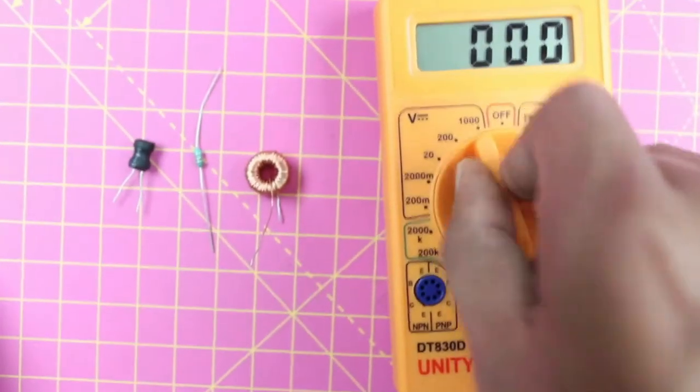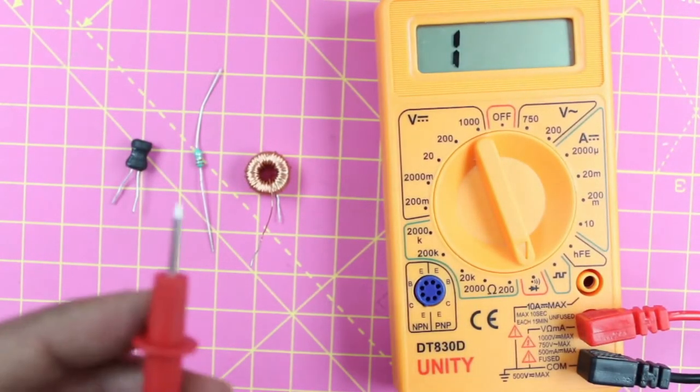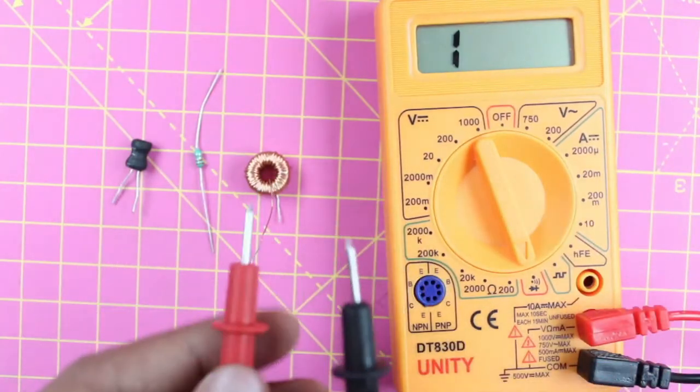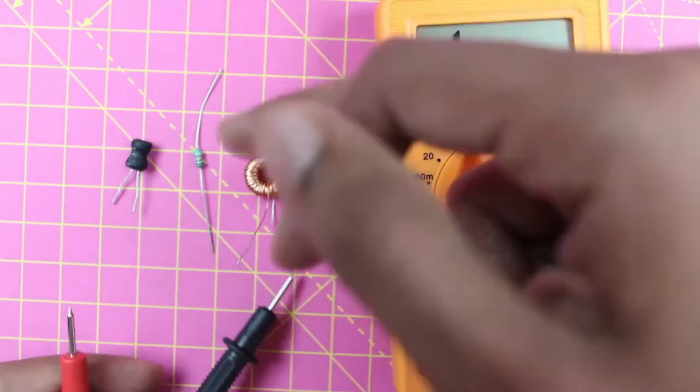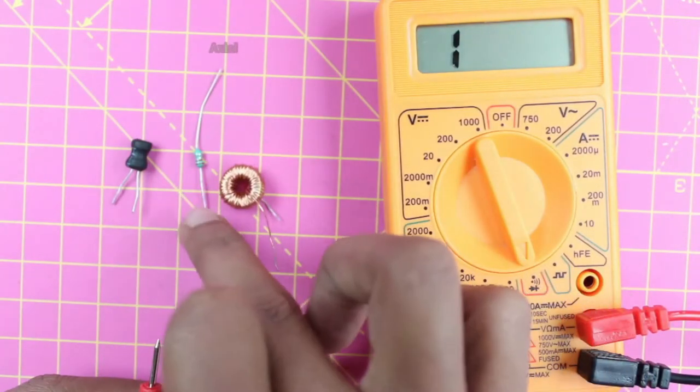To do that, put your multimeter in diode mode or continuity mode as you can see here. Then take your probes and all you have to do is check for continuity between the two terminals of your inductor. We have an axial inductor, a drum inductor, and a toroidal inductor.